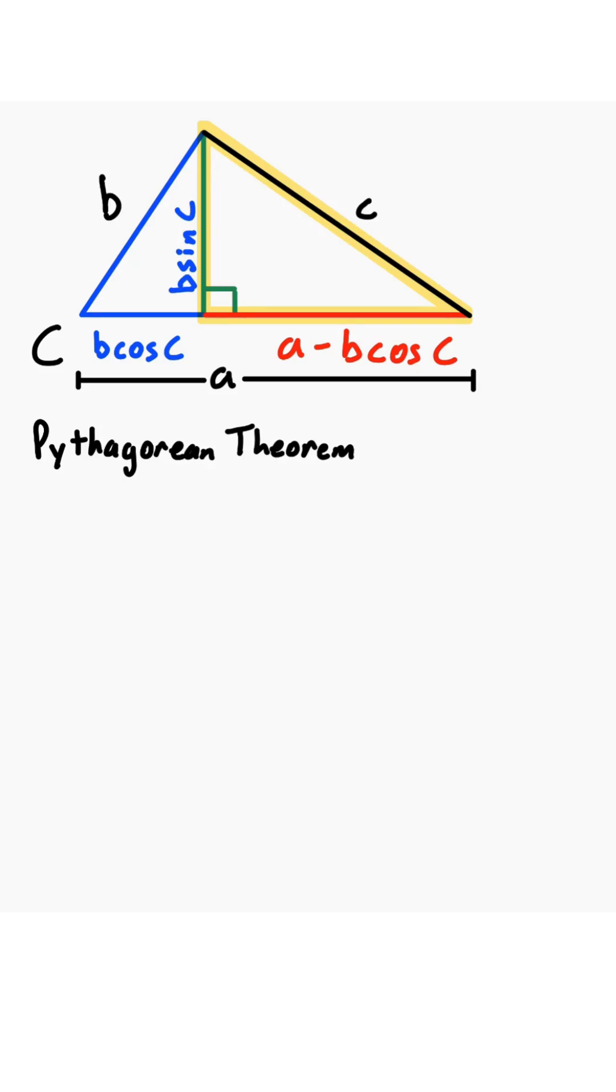Now we have a right triangle, so we can apply the Pythagorean theorem. It states that C squared is equal to B sine of C quantity squared plus A minus B cosine of C quantity squared. Now we do some algebra.